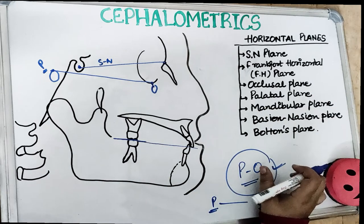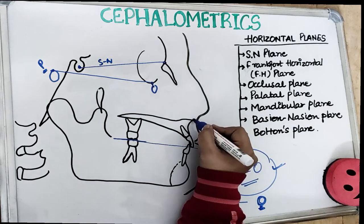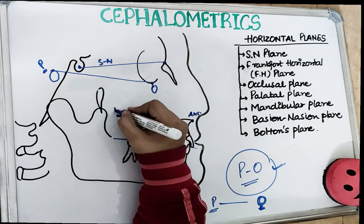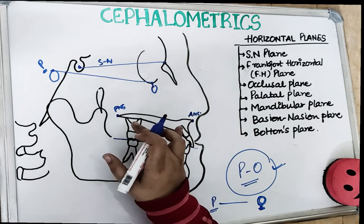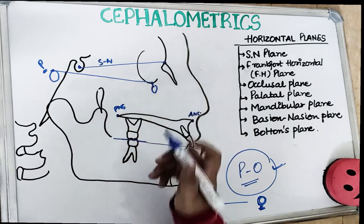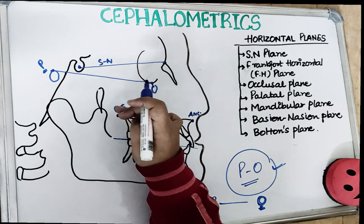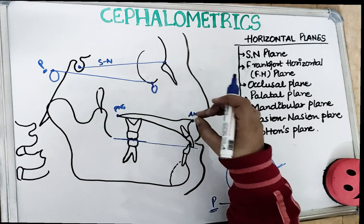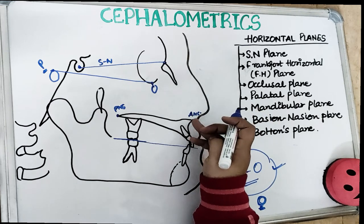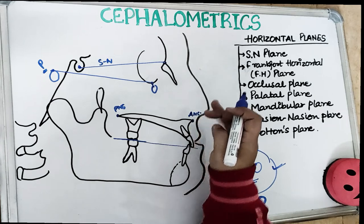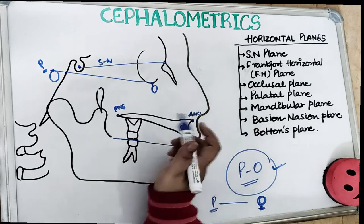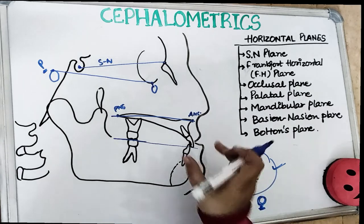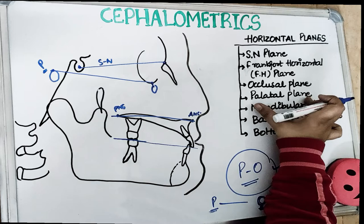The fourth horizontal plane is the palatal plane. The palatal plane is drawn from point ANS — the anterior nasal spine — to point PNS, the posterior nasal spine. The PNS is at the junction of the anterior wall of the pterygopalatine fossa and the floor of the nose, marking the distal limit of the maxilla. The ANS is the anterior tip of the sharp bony process of the maxilla, in the midline of the lower margin of the anterior nasal opening. A line from ANS to PNS is our palatal plane.